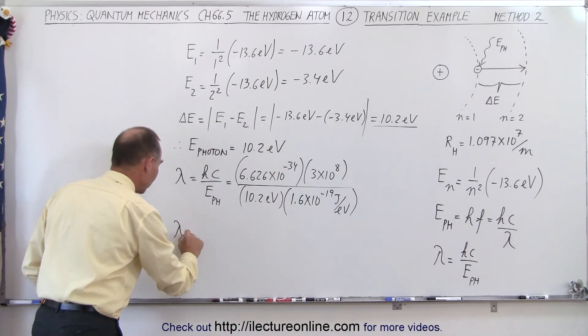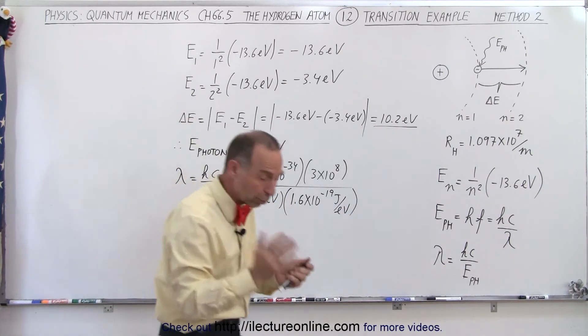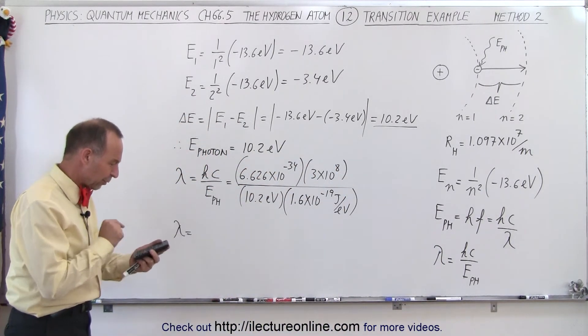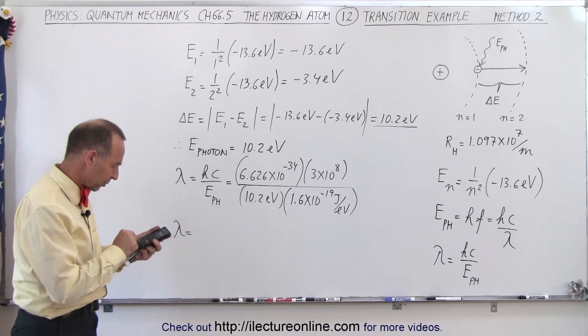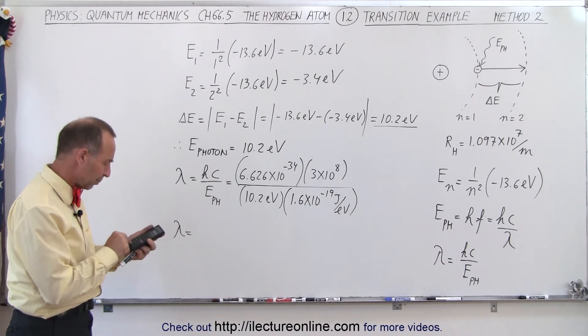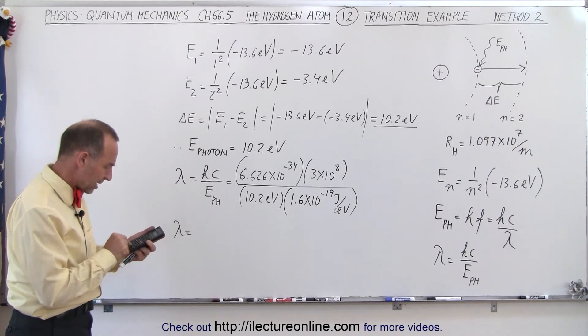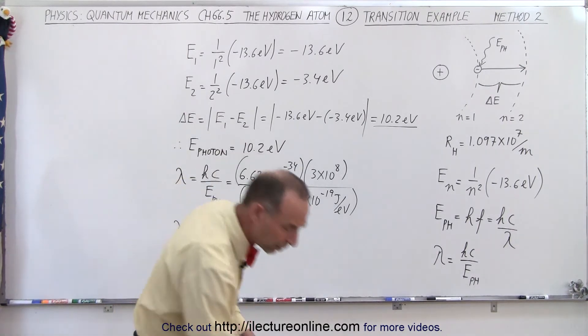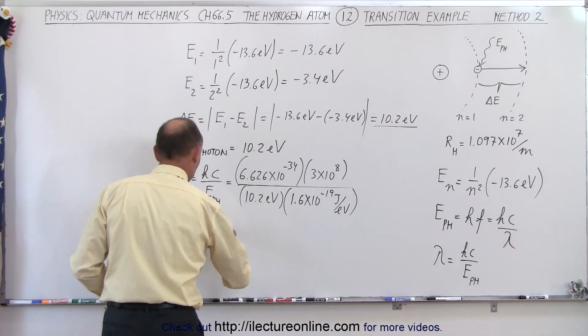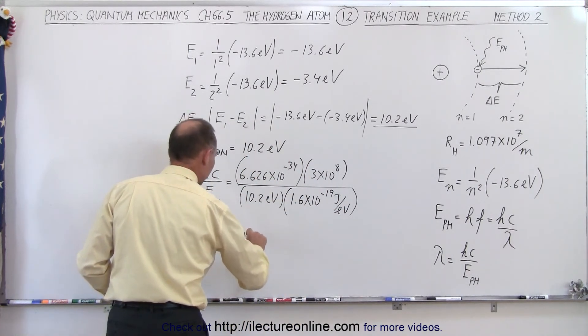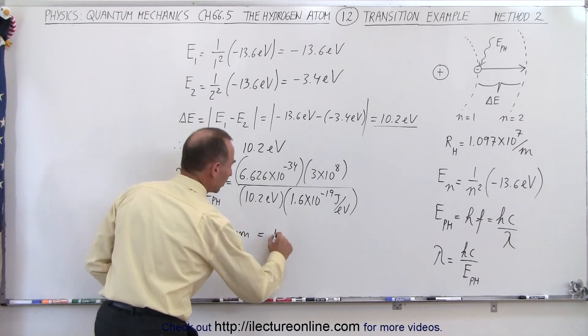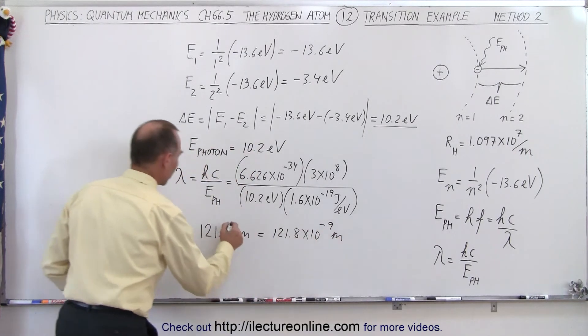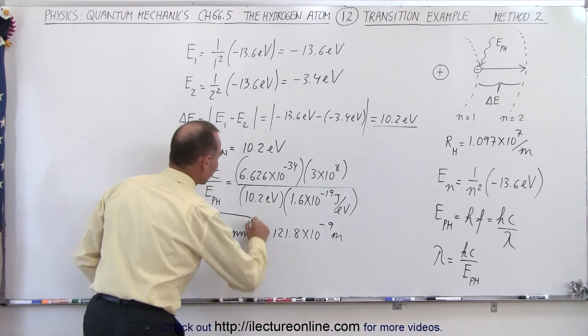So this should give us the wavelength of the photon absorbed to make that jump happen. So 6.626 e to the minus 34 times 3 to the 8 divided by 10.2 divided by 1.6 e to the minus 19 equals, and we get 121.8 nanometers, which is equal to 121.8 times 10 to the minus 9 meters. Notice we have a slightly different result here.